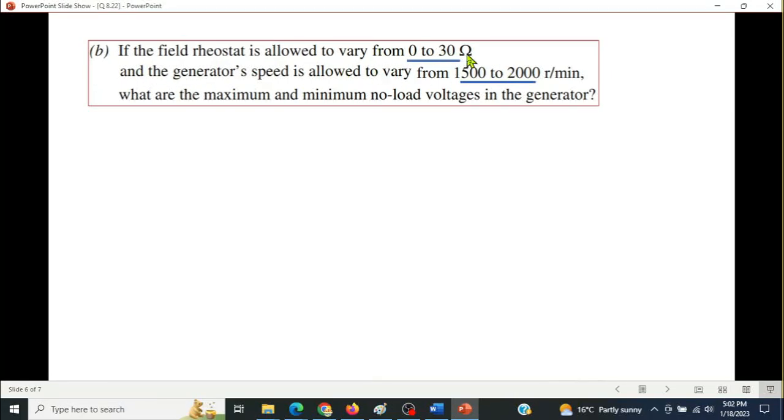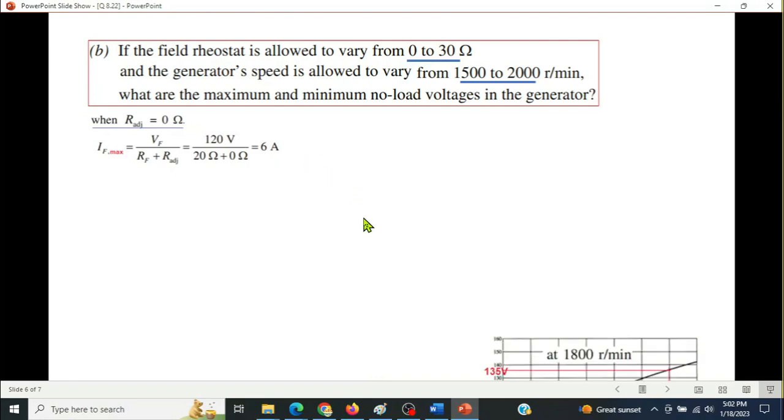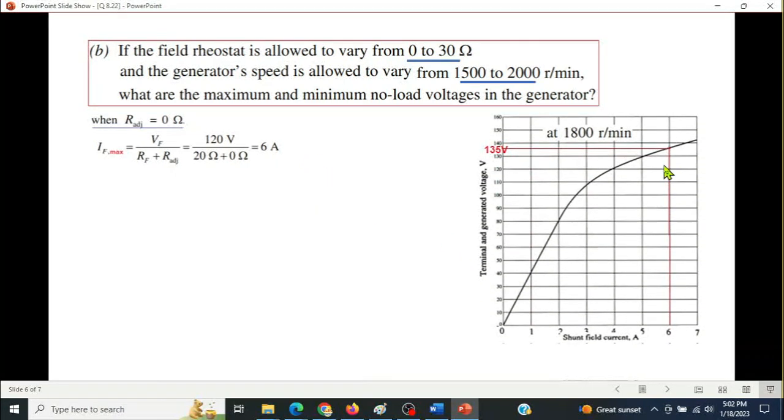Resistance change from 0 to 30, RPM change from 1500 to 2000 RPM. So for R zero, we calculate IF, it is exactly six ampere. From the graph, six ampere gives 135 volt. So it is exactly same as part A, but here it's different because this graph was drawn at 1800 RPM, but here RPM has changed.